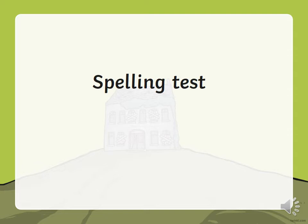Your first word is answer. Please answer my calls. Answer. Your second word is appear. She was about to appear in front of the ghost. Appear. Your third word is arrive. I always arrive to school on time. Arrive. Your fourth word is believe. Believe in yourself and you'll be able to do it. Believe. Your fifth word is bicycle. I rode my bicycle to school every day. Bicycle.